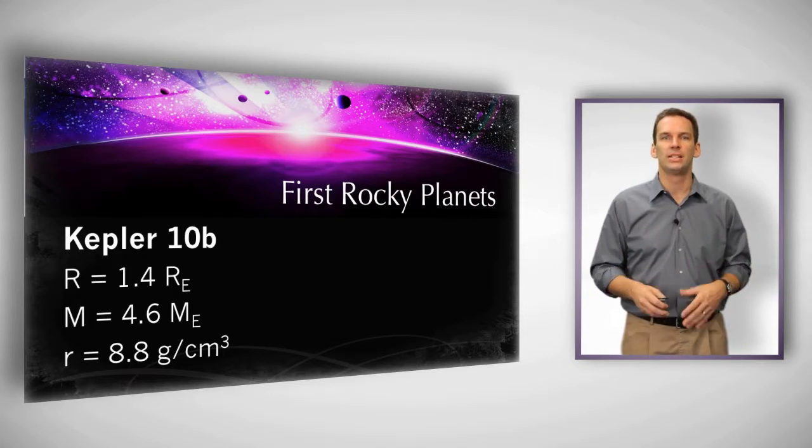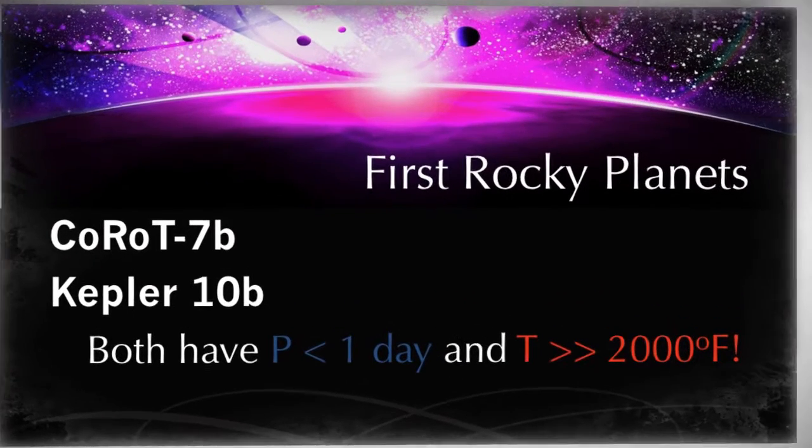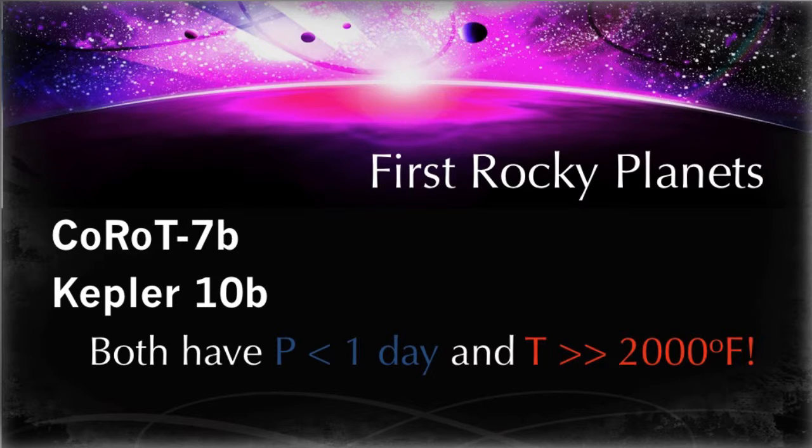Both of these planets had temperatures well over 2,000 degrees Fahrenheit, so these are not remotely habitable planets. They're very close to their parent stars. But what it does say is that astronomers are developing the capabilities. This was demonstrating that astronomers had the capability to detect Earth-sized planets around stars that kind of look like our sun.